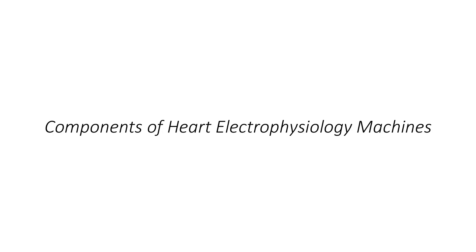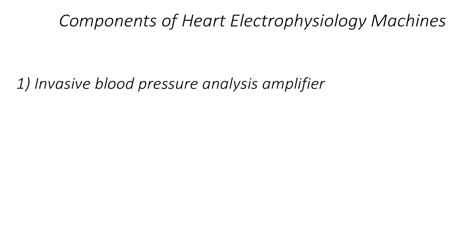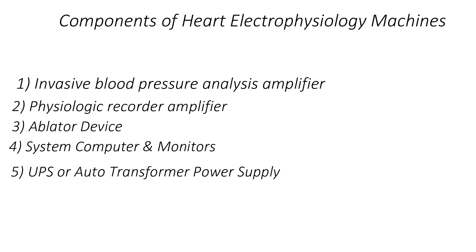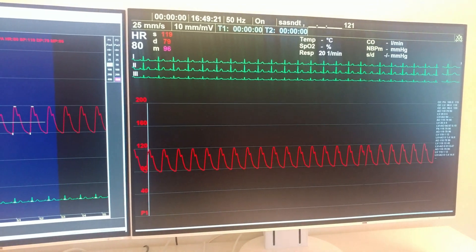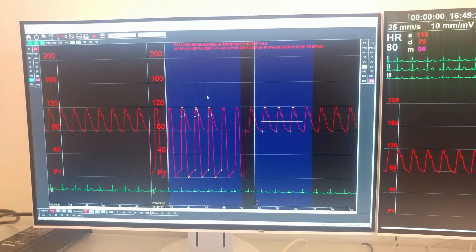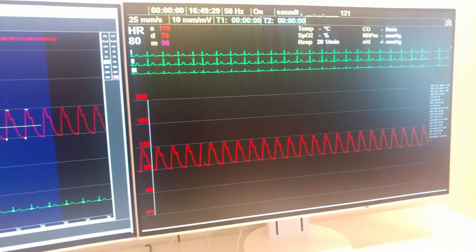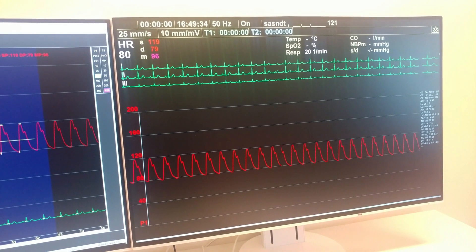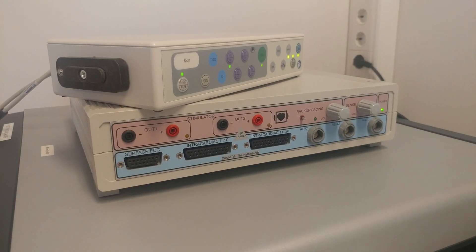Components of heart electrophysiology machines include an invasive blood pressure analysis amplifier, a physiologic recorder amplifier with simulator and cardiac output, an ablator device, system computer and monitors. Some suppliers also provide an auto transformer or UPS supply along with the devices. The blood pressure analysis amplifier is used to measure multiple site invasive blood pressures to analyze variation and know time differences. The process of recording signals from various electrode catheters is accomplished by means of a data acquisition system or physiologic recorder.